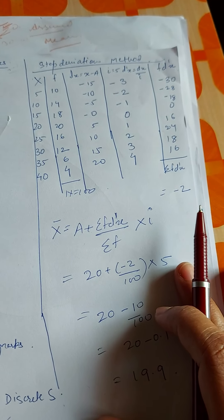Next, we do the same question but the method has been changed — this is the shortcut method in discrete series. Same question, continuing with the same numbers x and f. The change is in the formula. The formula for the shortcut method is x̄ equals a plus sigma fdx divided by f. So how do we calculate dx?